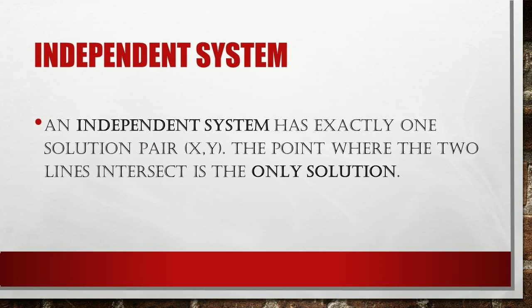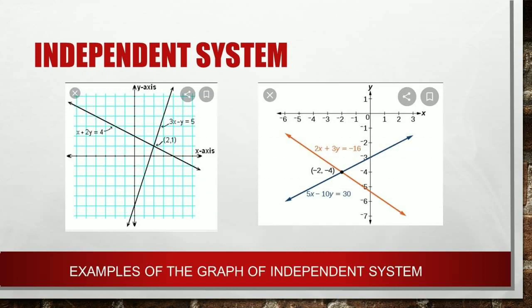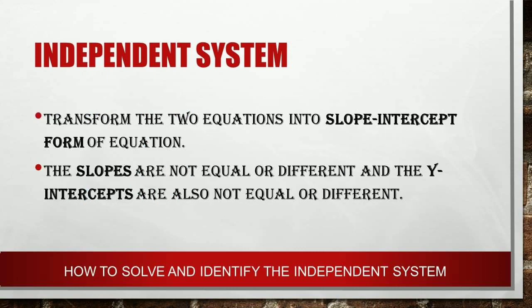Let us define each system. Let's start with the independent system. An independent system has exactly one solution pair (x, y). The point where the two lines intersect is the only solution. Here are examples of the graph of an independent system. We can identify the independent system by transforming the two equations into slope-intercept form. You will see that the slopes are not equal and the y-intercepts are also not equal.